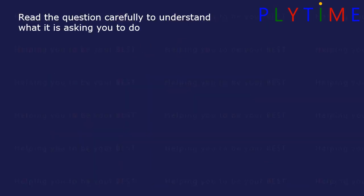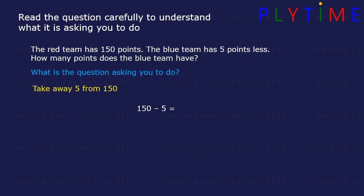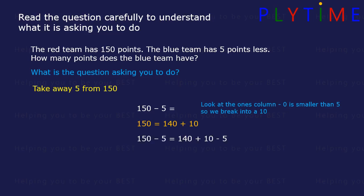Read the question carefully to understand what it's asking you to do. The red team has one hundred and fifty points. The blue team has five points less. How many points does the blue team have? It says take away five from one hundred and fifty, so we have one hundred and fifty minus five. We look at the ones column — zero is smaller than five, so we need to break into a ten. One hundred and fifty is the same as one hundred and forty plus ten. So one hundred and fifty minus five is one hundred and forty plus ten minus five. Now we can do ten minus five equals five, so we're left with one hundred and forty plus five, which is one hundred and forty-five. The blue team has one hundred and forty-five points.